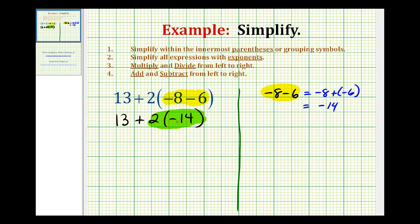So we have a positive times a negative, and the rule is a positive times a negative is always negative. So positive two times negative 14 equals negative 28. So we have 13 plus negative 28.